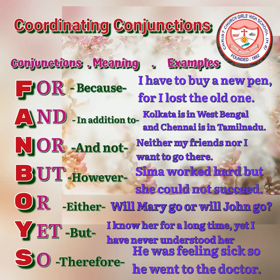The seven coordinating conjunctions are: for, and, nor, but, or, yet, and so. It is very easy to remember them with the help of the mnemonic FANBOYS.